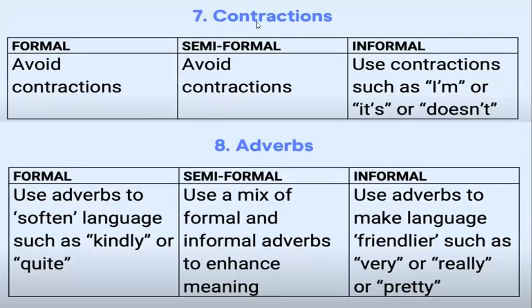The seventh rule is contractions. In formal letters, do not use contractions. In semi-formal writing, try to avoid contractions. In informal writing, you can use them freely. The eighth rule is adverbs. In formal writing, use adverbs to soften language, such as 'kindly' or 'quite.' In informal writing, use adverbs to make language friendlier, such as 'very,' 'really,' or 'pretty.'